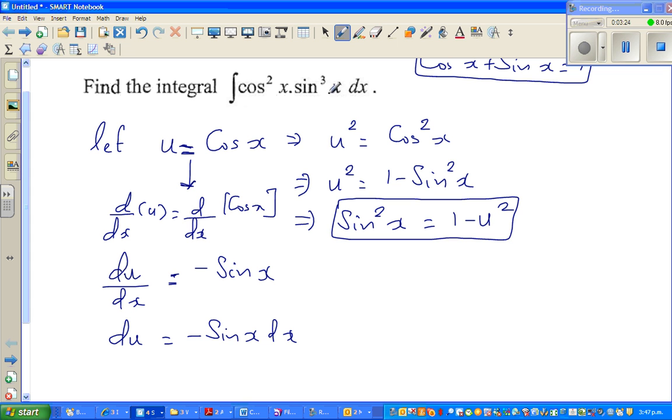But I can see a sine x dx here. So if you multiply both sides by negative 1, minus du is sine x dx. Just like that. So these are the three things that we need to substitute back.